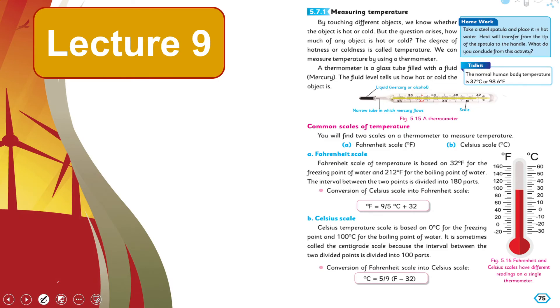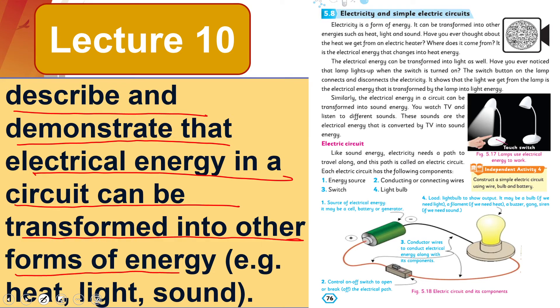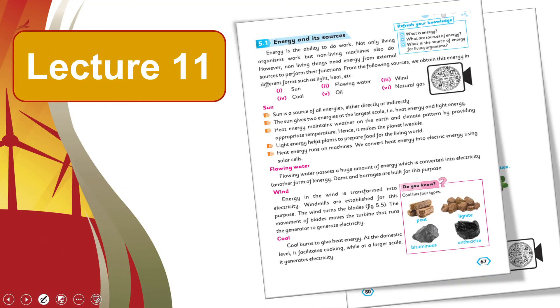In lecture number ten, students will be able to describe and demonstrate that electrical energy in a circuit can be transformed into other forms of energy. So electricity is also a form of energy, and how an electrical circuit transforms energy into other forms—for example, heat, light, and sound. Any batteries you connect with wires, when that electrical energy goes to the bulb, it will light up. We will practically demonstrate it and see how the energy transforms.